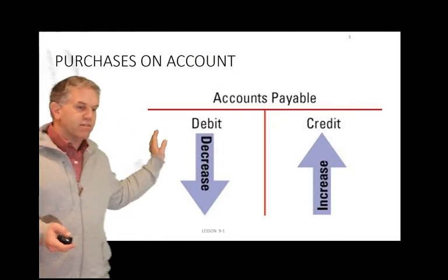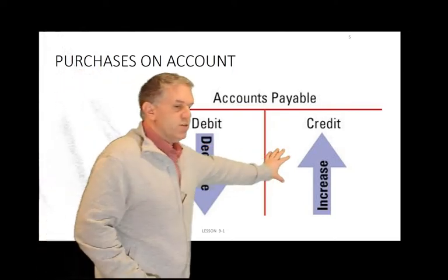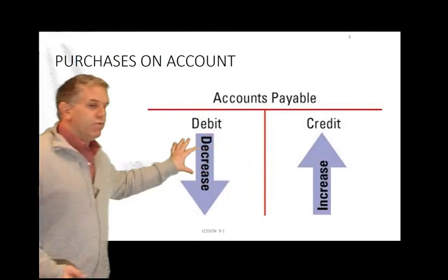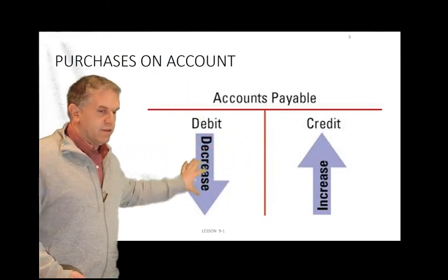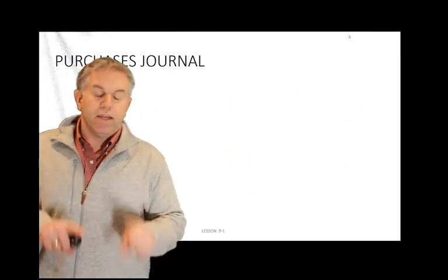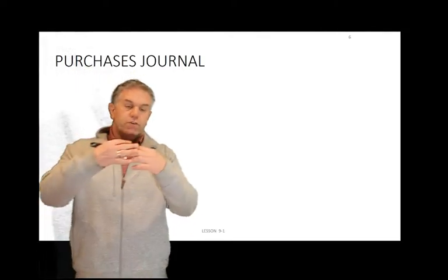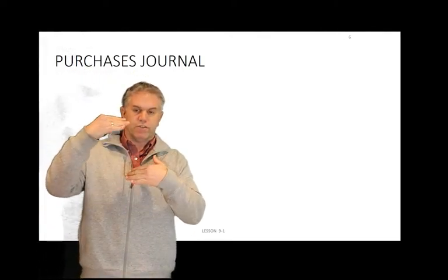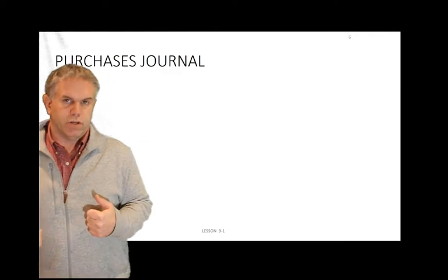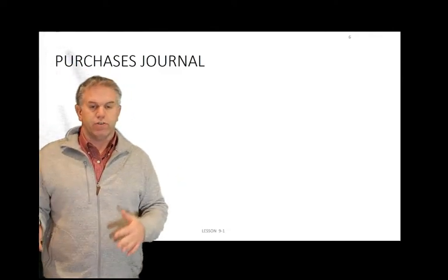Accounts payable sits on the right-hand side of the accounting equation, so it is increased with a credit. When we pay it, it decreases with a debit. Unlike the first eight chapters where we used the general journal the whole time, now we're not going to use the general journal exclusively. Instead, we're going to use different specialized journals.